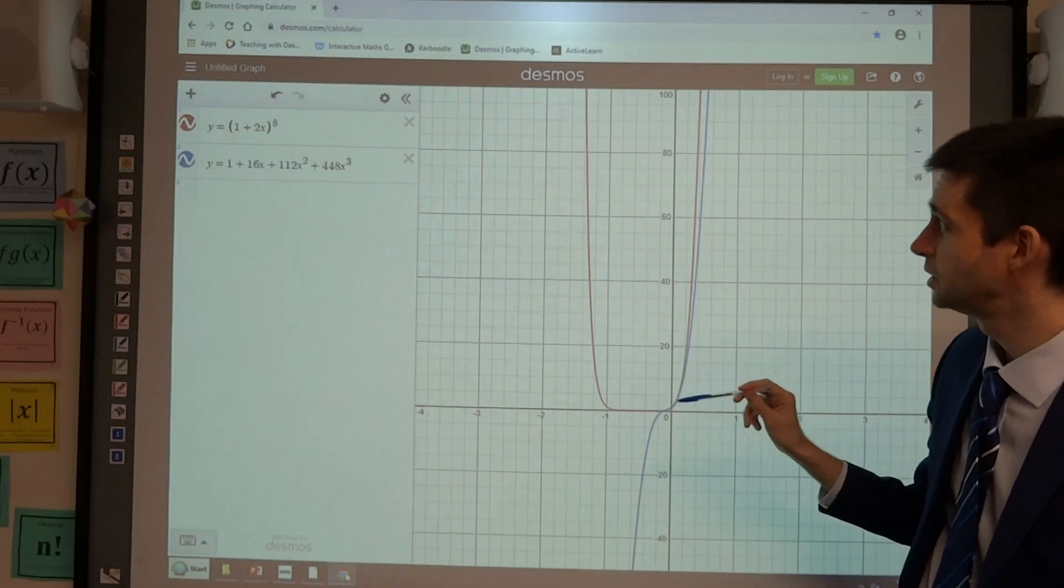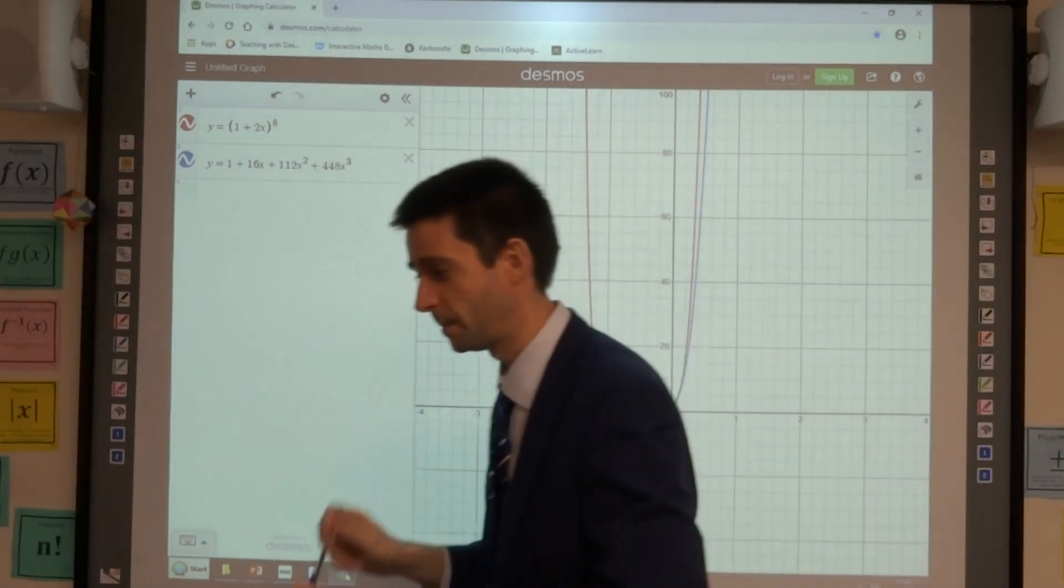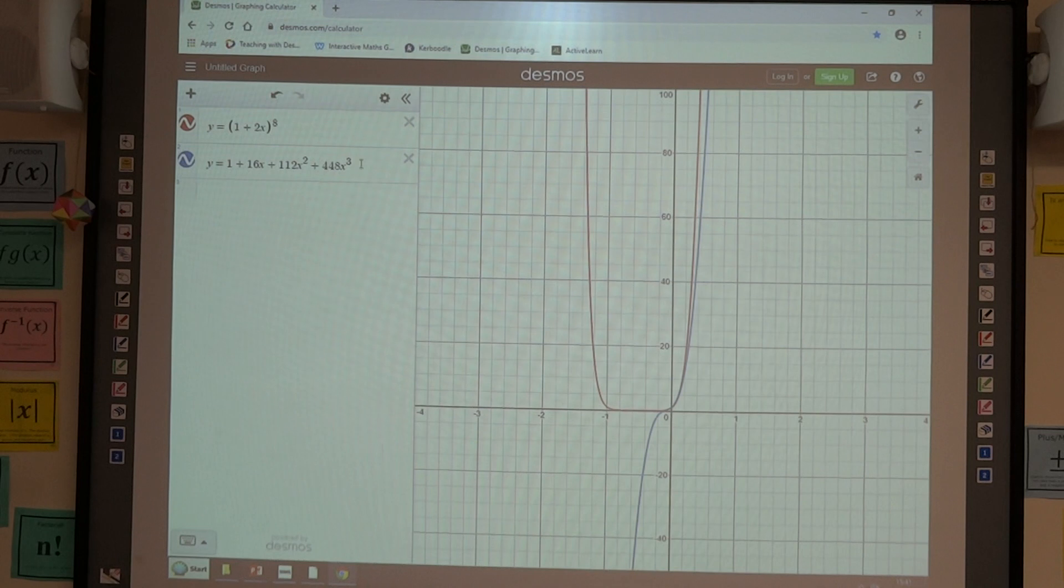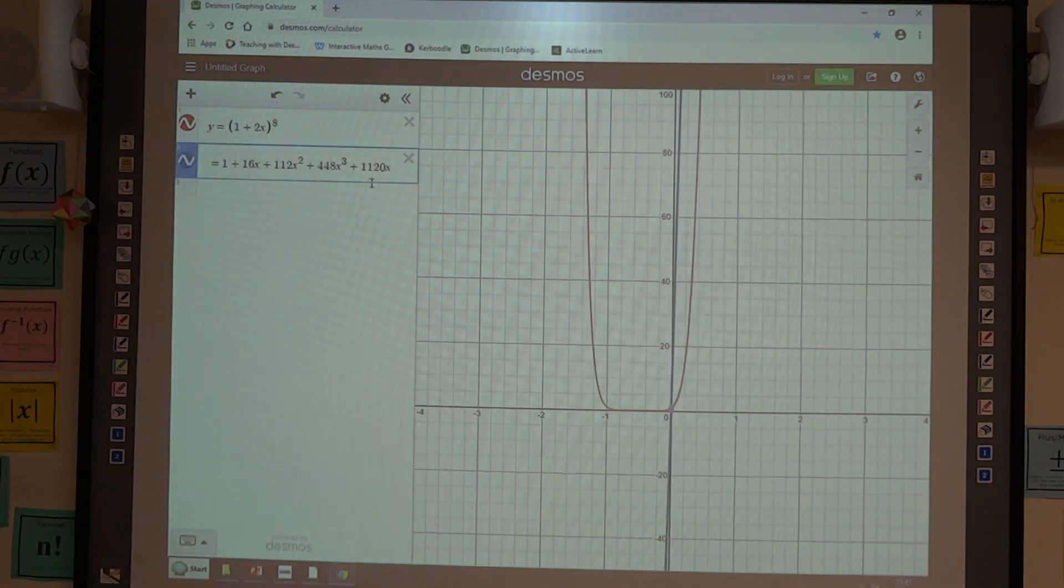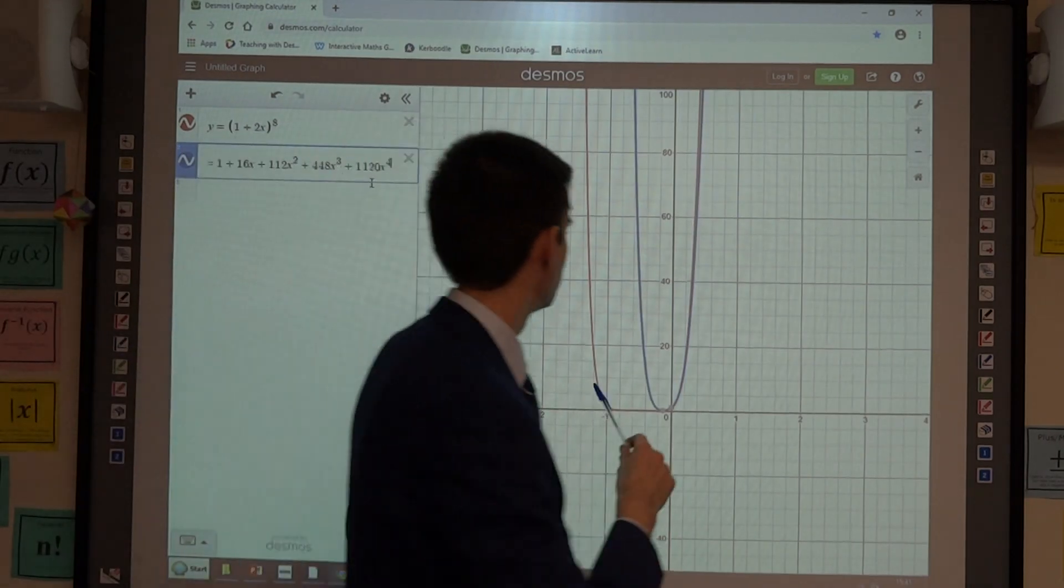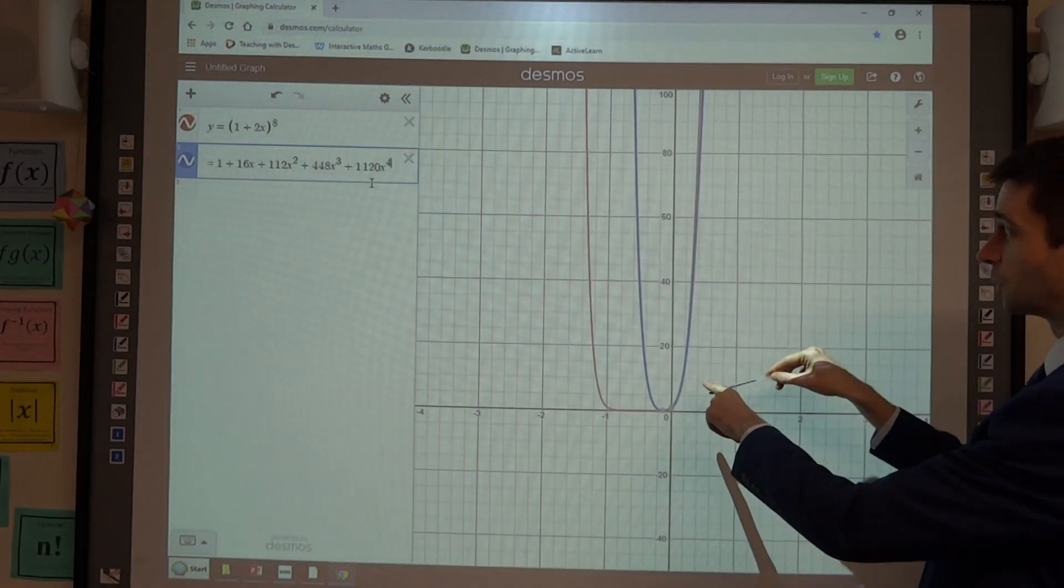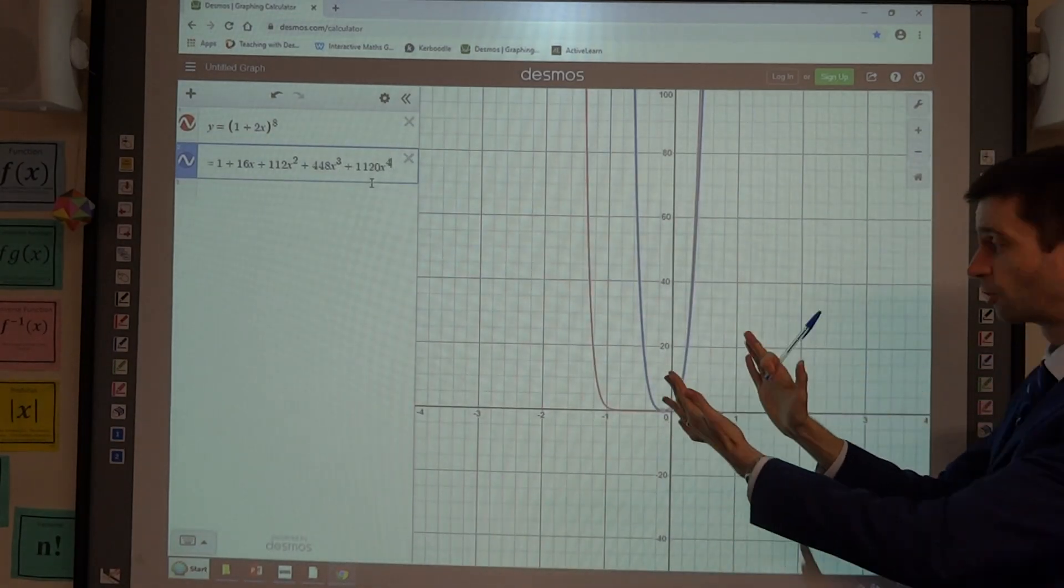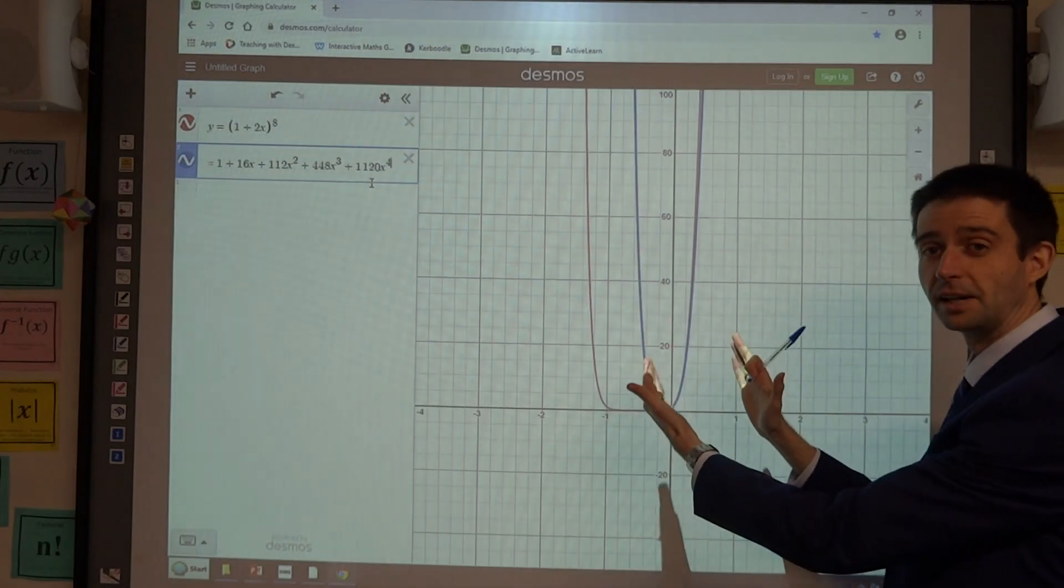What I'm just going to do, I'm going to add in one more term. I'll be out of shot for just a moment. The next term is 1020x^4. And if I add that in, you can see that what's happened is the blue curve has got closer to the red curve for a larger interval of values of x.